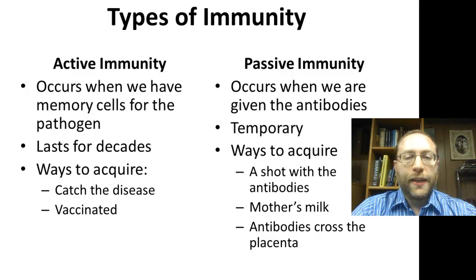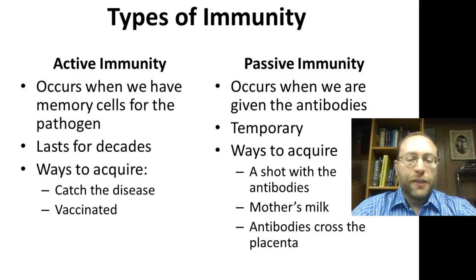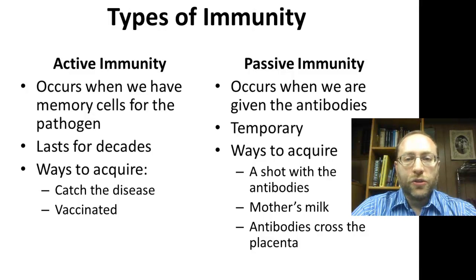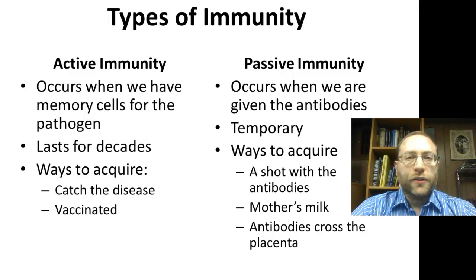The second kind is passive immunity, which is short-term. You don't have killer T cells or cells that produce anything — you're just given the antibodies. Antibodies fight the pathogen if you're exposed, but it's temporary; it only lasts as long as the antibodies are in your body since you're not producing any. One way to acquire it is a shot with antibodies, like a gamma-globulin shot — for example, if you travel to Africa where there are diseases we're not exposed to here, they'll give you a shot filled with antibodies so you'll be temporarily immune.